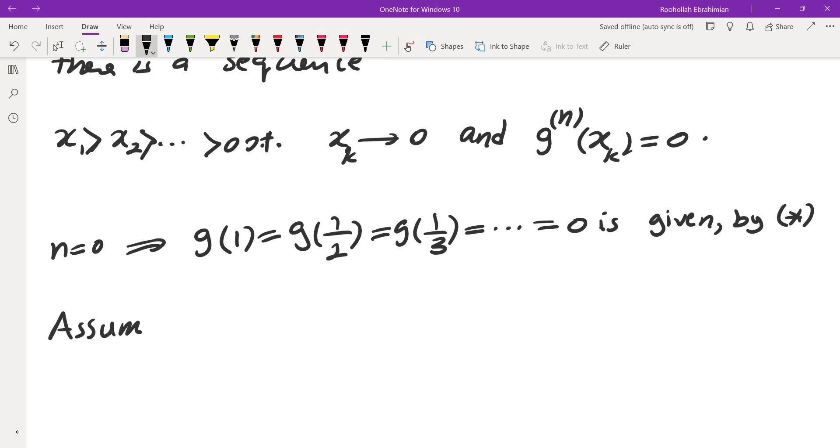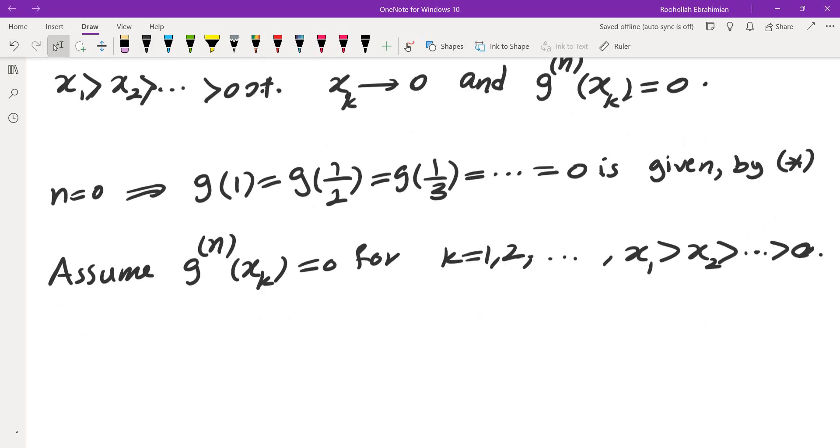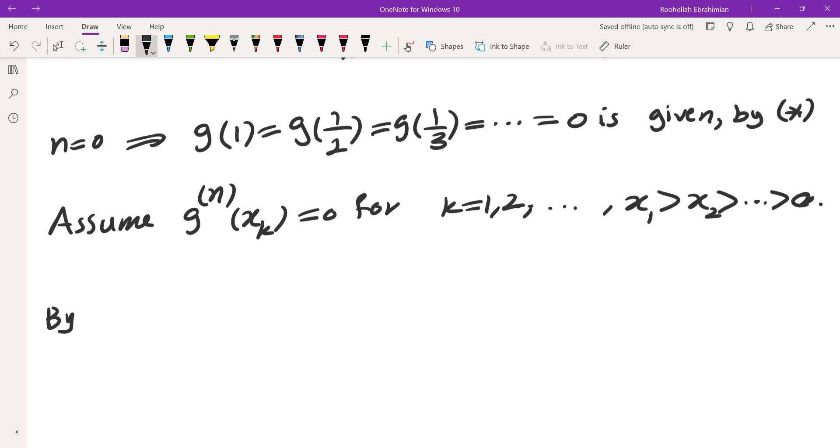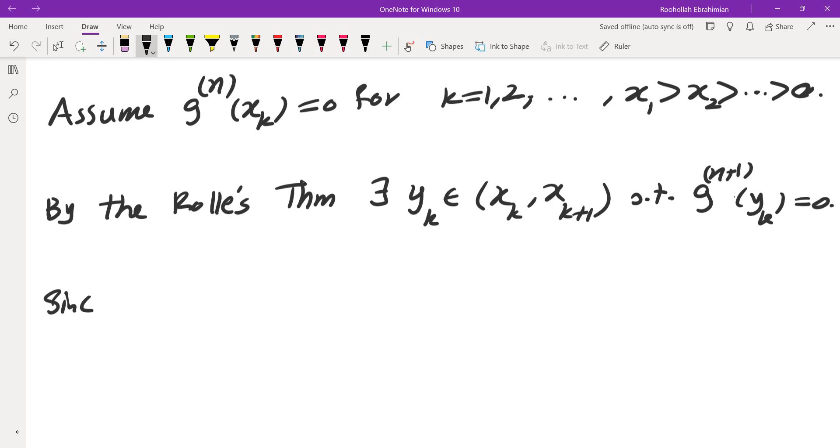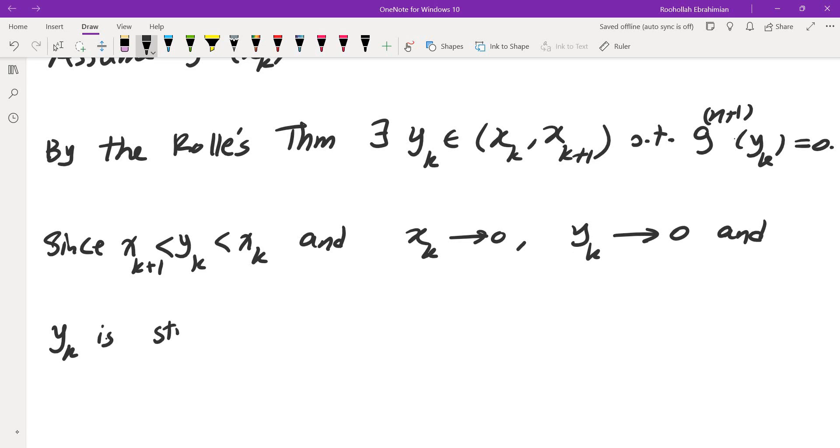So now assume gn of xk is 0 for k equals 1, 2, etc. And where x1, x2 is a decreasing sequence converges to 0. So now use the Rolle's theorem. By the Rolle's theorem, there is some yk between xk and xk plus 1 such that gn plus 1 of yk is 0. Now since yk is between xk and xk plus 1 and xk converges to 0, yk also converges to 0 and yk is strictly decreasing.